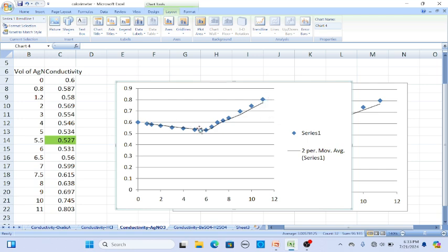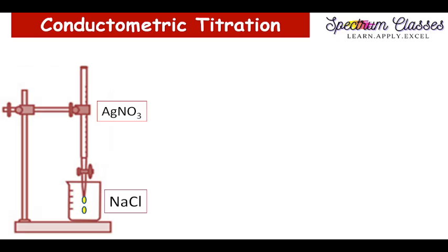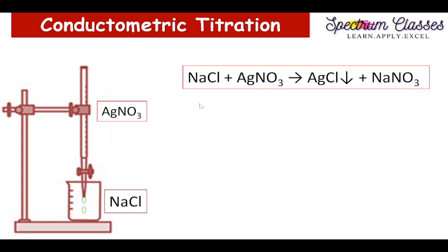Now I am going to explain why it is going down and then increasing so sharply. In the burette we have filled AgNO3, and in the beaker we are having NaCl. This NaCl on reaction with AgNO3 forms AgCl as a precipitate — which I showed you during the titration — and it also forms NaNO3. So the reaction taking place is: NaCl + AgNO3 → AgCl↓ + NaNO3.